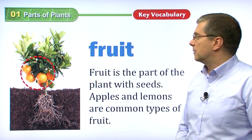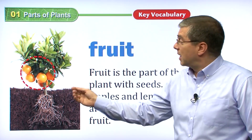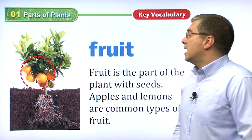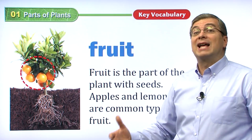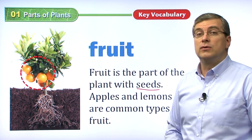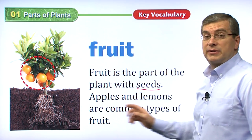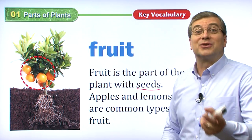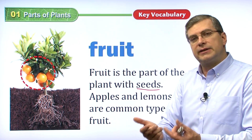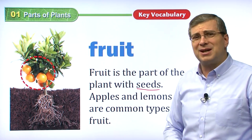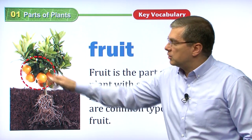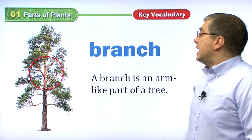Flowers produce fruit. Here we see an example of fruit — these look like oranges and look delicious! Fruit is good for us; it's the part of the plant that we eat. Fruit is the part of the plant with seeds. Apples and lemons are common types of fruit. If you cut open an apple, you will see seeds inside. A lemon is sour, but it also has seeds. Plants produce fruit.